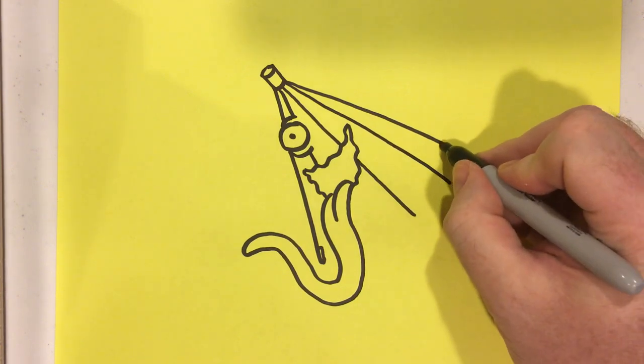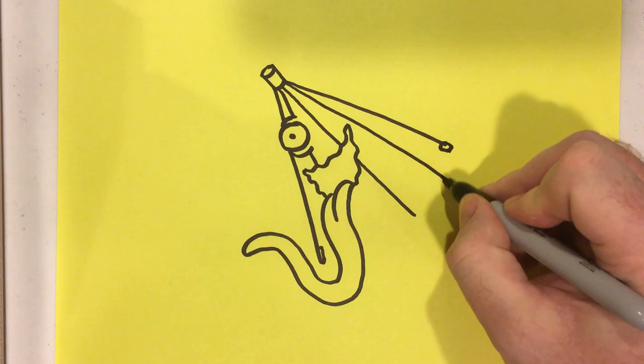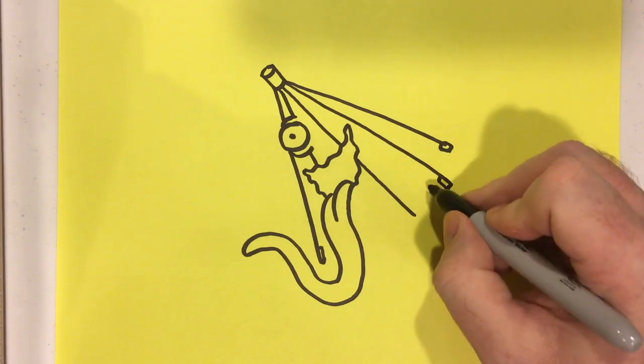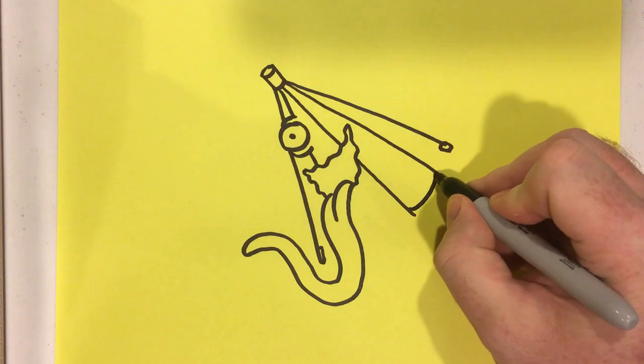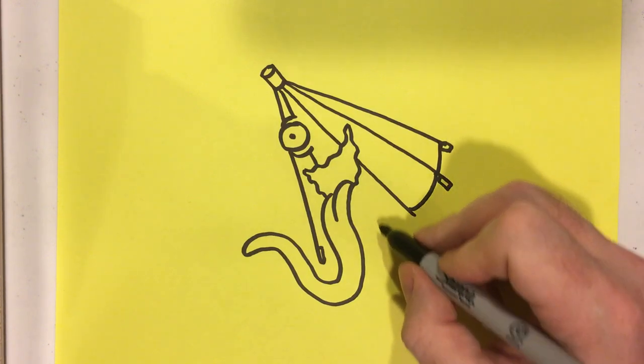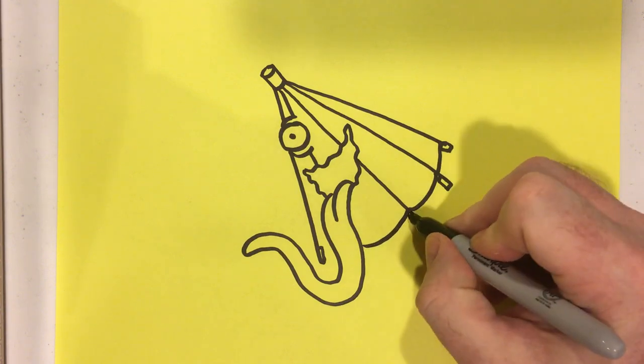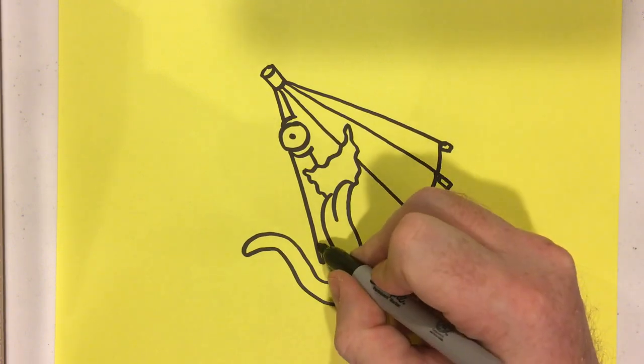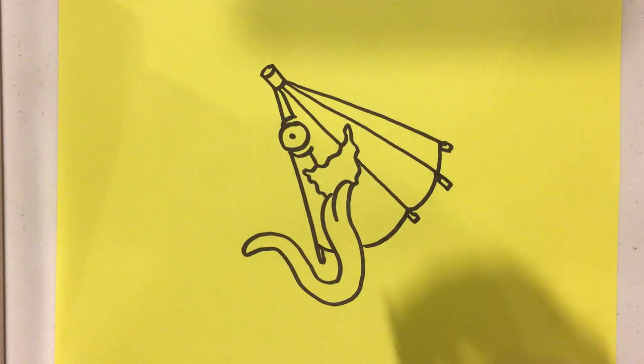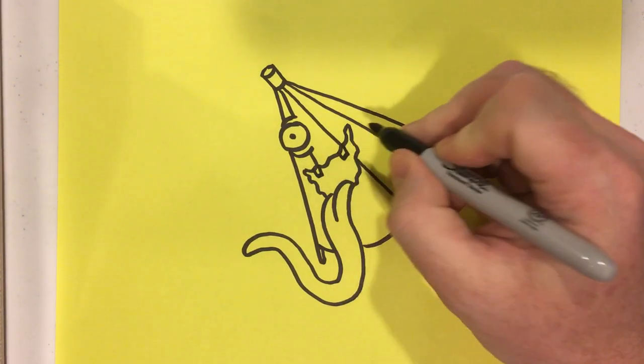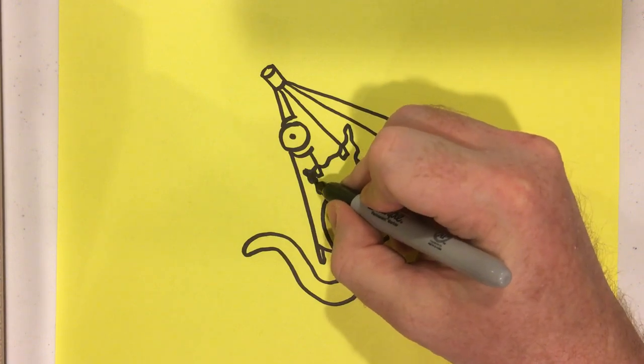And then we're going to draw these little things on the ends here. Some kind of scalloped bits. A big one there. And then one like that. A couple of teeth. And fill in the inside of the mouth.